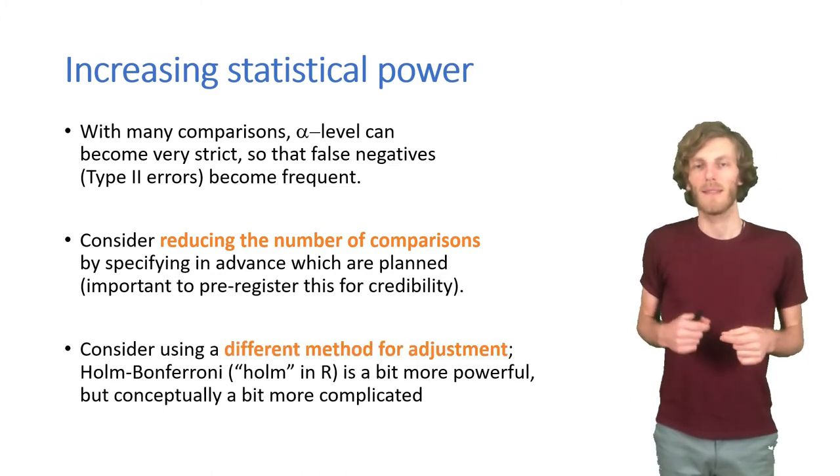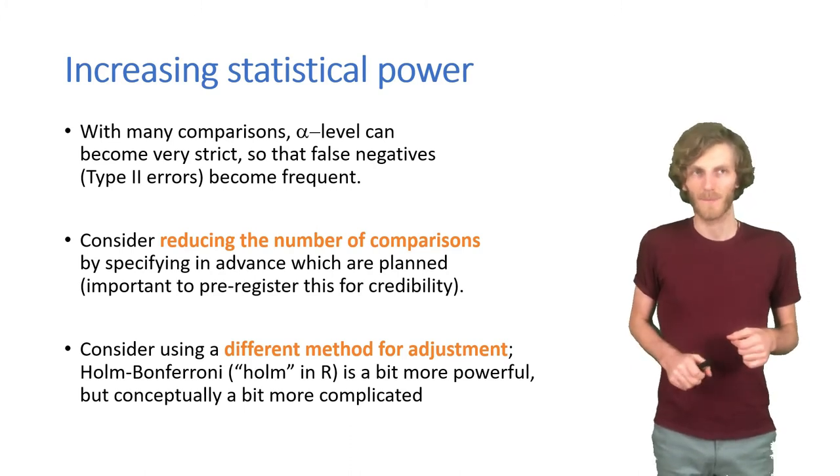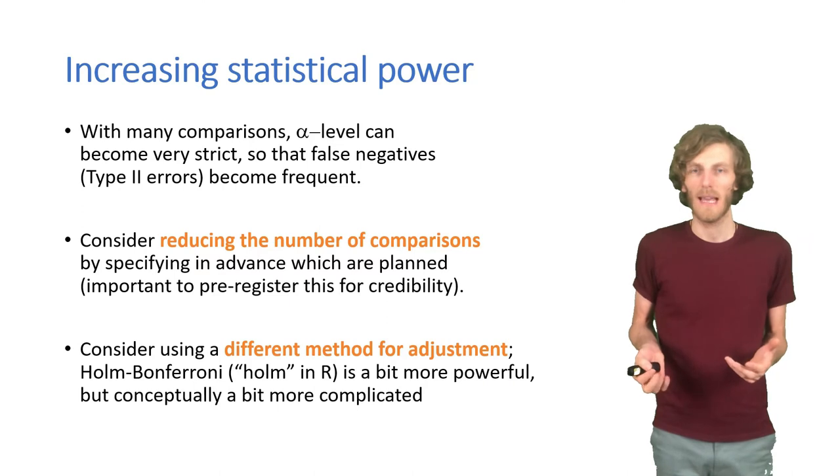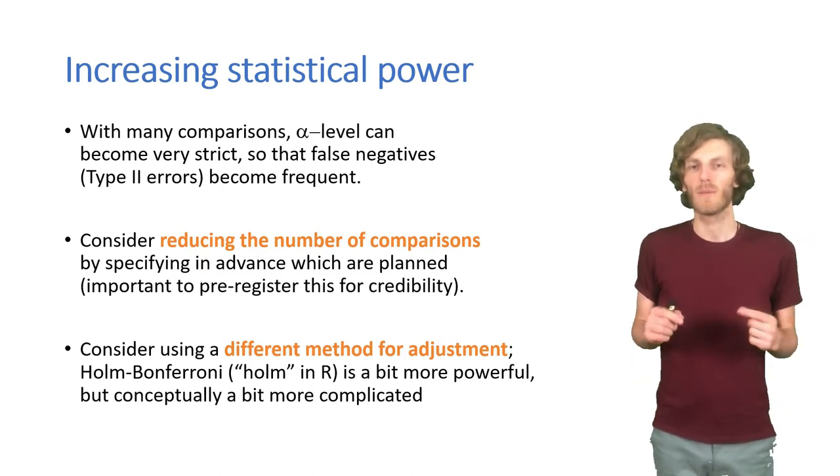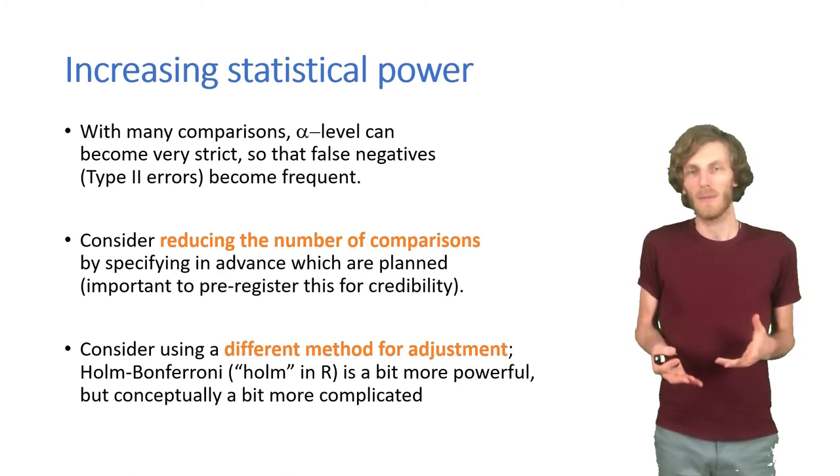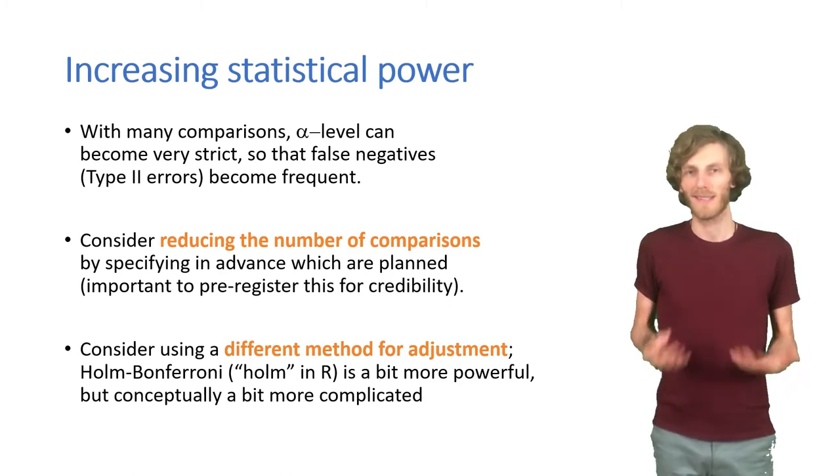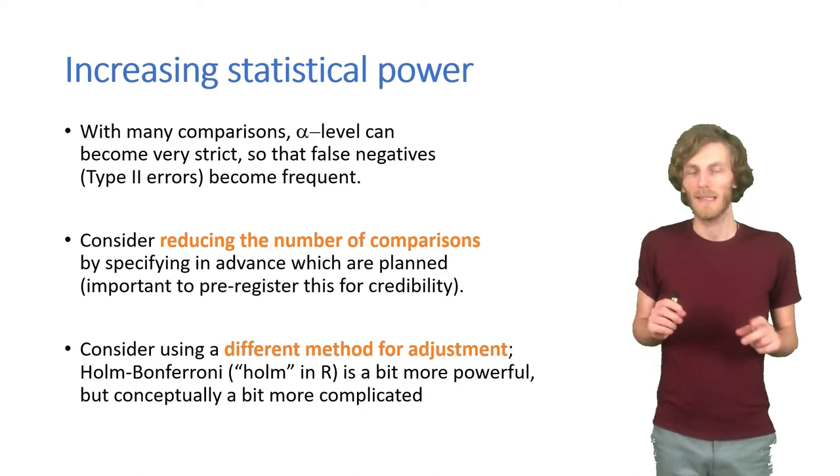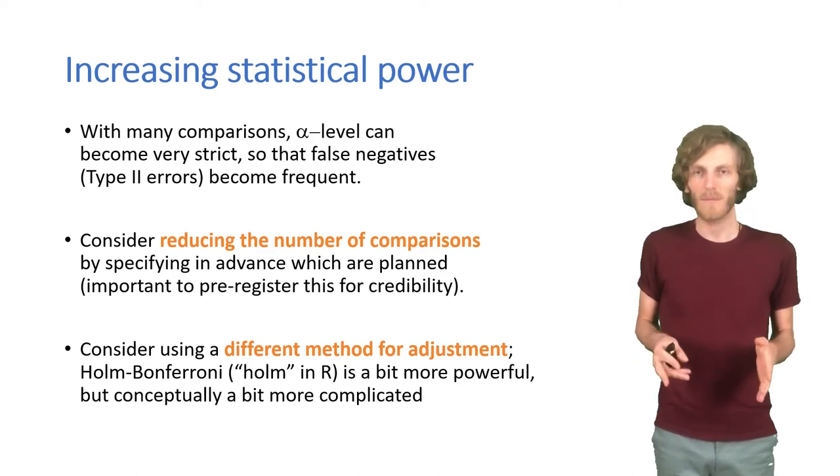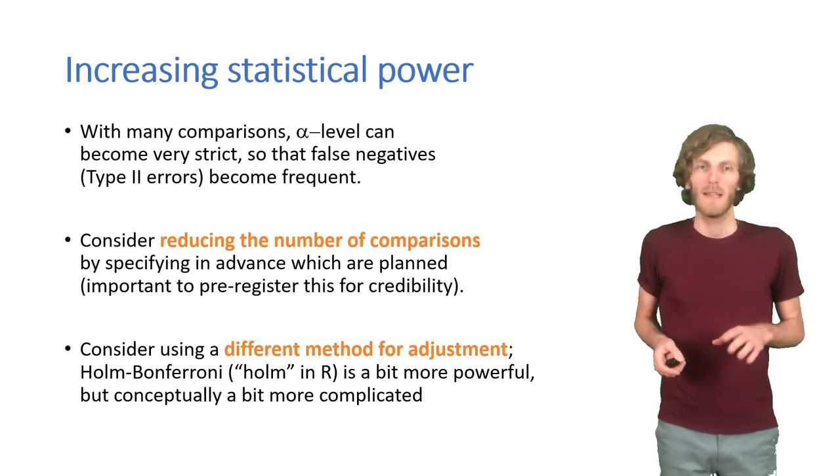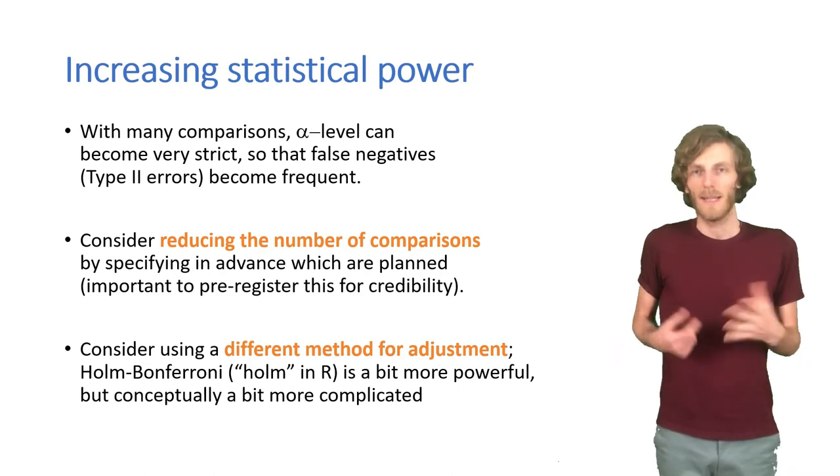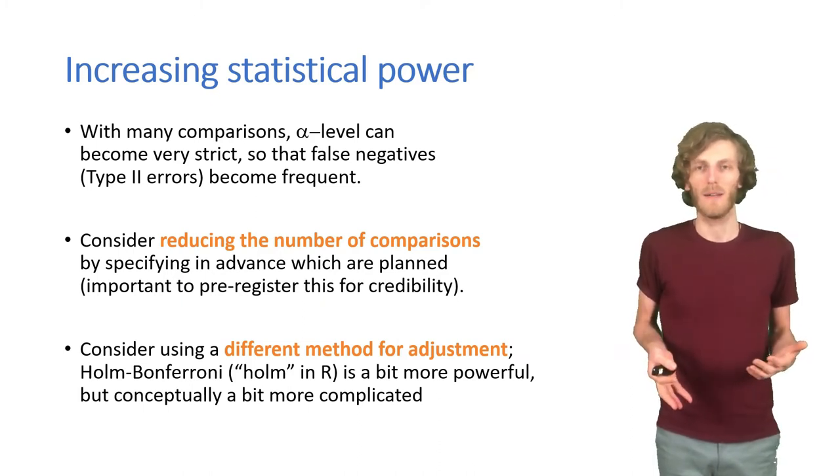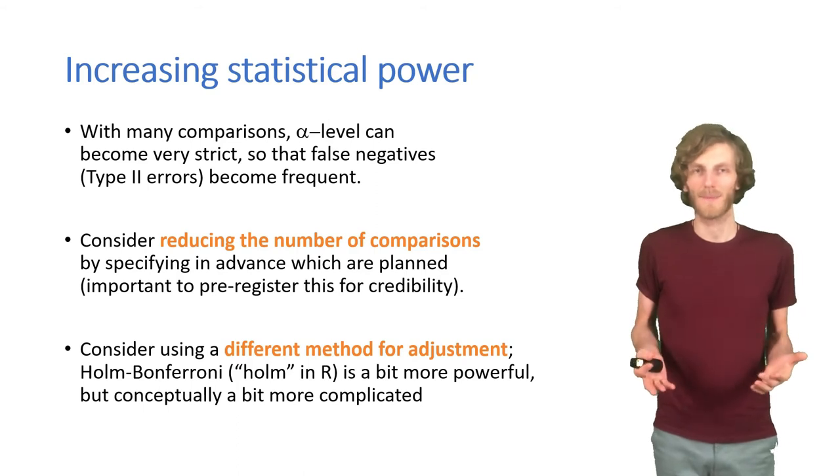We can also consider using a different method for the adjustment of the alpha level. So there is the Holm-Bonferroni method. That's actually just better than the Bonferroni method. It's a bit more powerful statistically, but it's also more complicated. So there usually what people do is run both, see if there's a difference. Usually there isn't. And then stick with the simpler Bonferroni method. If you want to try out the Holm-Bonferroni method, the name for it in R, in the p-adjust argument, is just Holm. But apart from that, there isn't much we can do. If we have lots of conditions that we want to compare, we just need to accept that that reduces our statistical power. So we'll need a larger sample size in most cases.